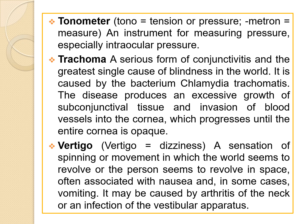The next term is trachoma — a serious form of conjunctivitis and the greatest single cause of blindness in the world. It is caused by the bacterium Chlamydia trachomatis, and the disease produces extensive growth of subconjunctival tissue and invasion of blood vessels into the cornea, which progresses until the entire cornea is opaque. The final term is vertigo — a sensation of spinning or movement in which the world seems to be revolving or the person seems to be revolving in space. It is often associated with nausea and in some cases vomiting, and may be caused by arthritis of the neck or an infection of the vestibular apparatus.